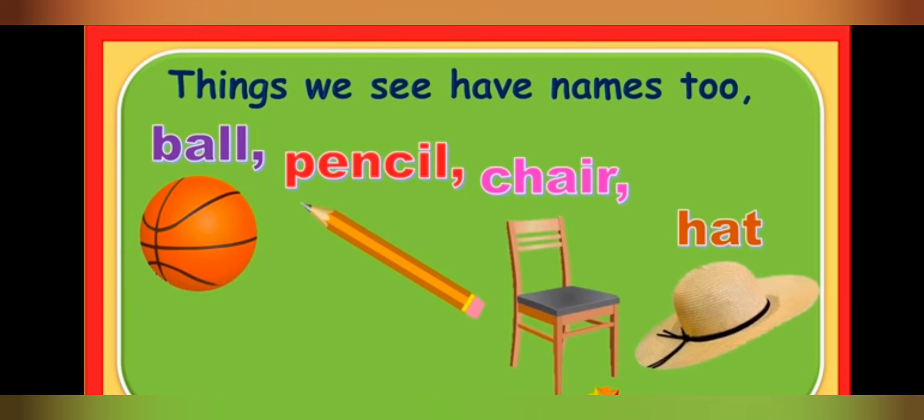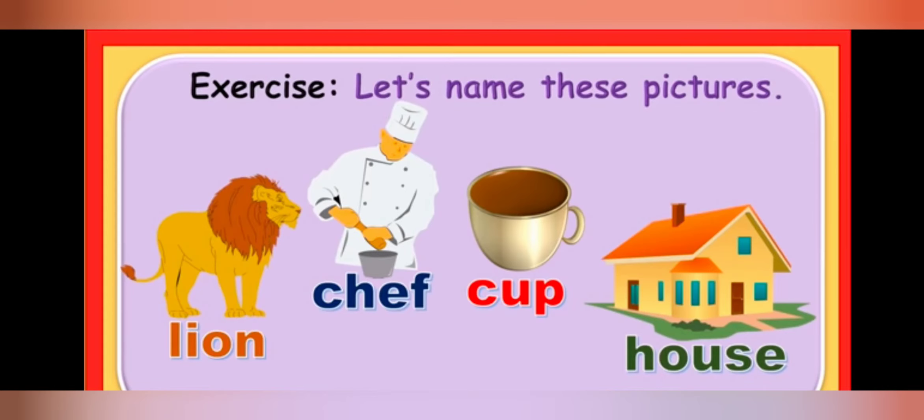Let us name these pictures. First picture is of a lion. Second picture is of a chef. And who is a chef? Chef is the one who cooks in big hotels. They cook food for us. Third picture is of a cup. And fourth one is a house. Very good.